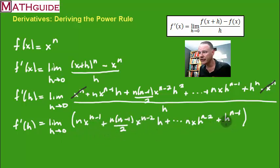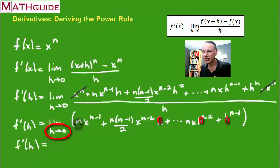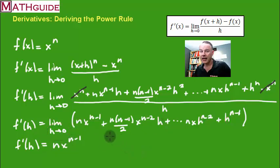Now, if h is approaching zero, this term, all the terms, see all of these terms have an h in them. So if you're going to take a zero, multiply it by whatever is around it, right? This whole term is going to be a zero. All of the terms in between these terms are going to be zero. All of these terms will be zero because they all have h's in them. So the only term remaining after the h goes to zero is this term right here. So you'll get that right there.